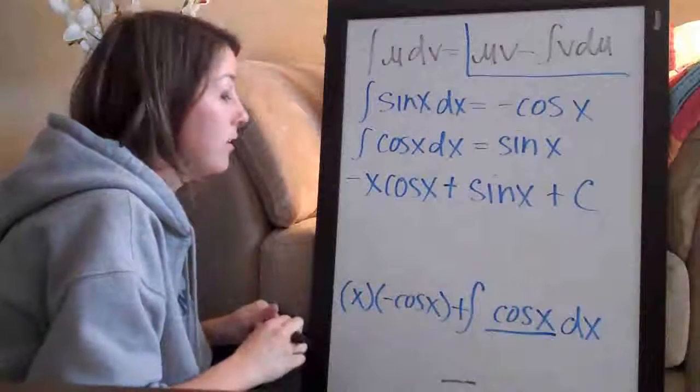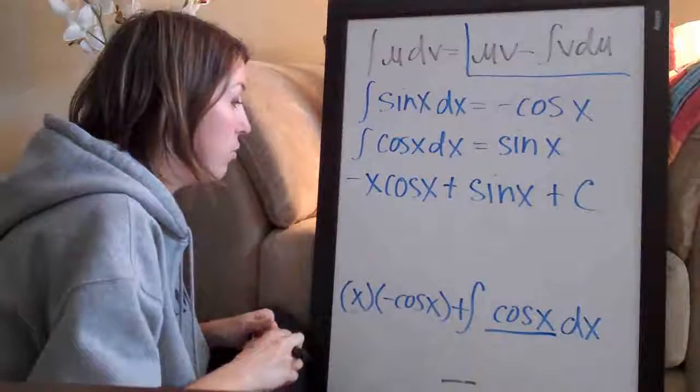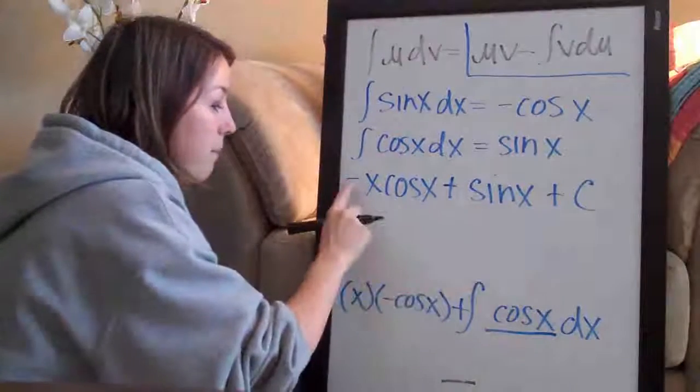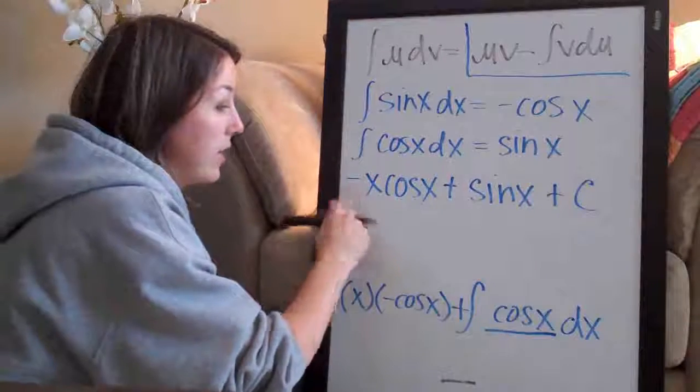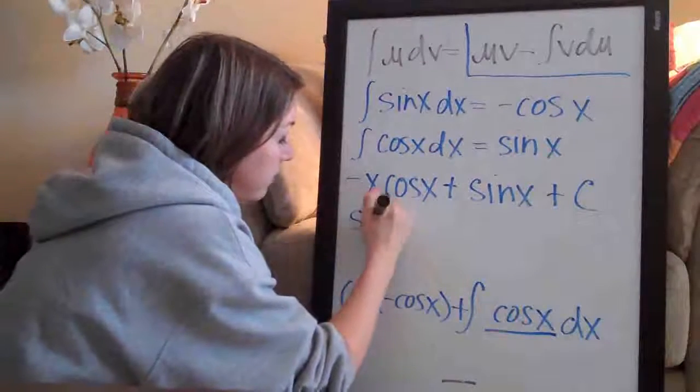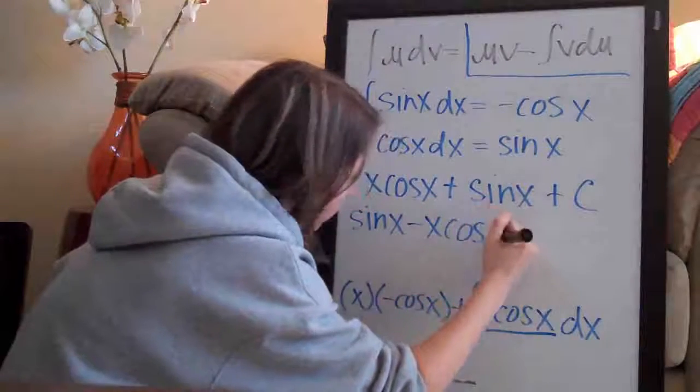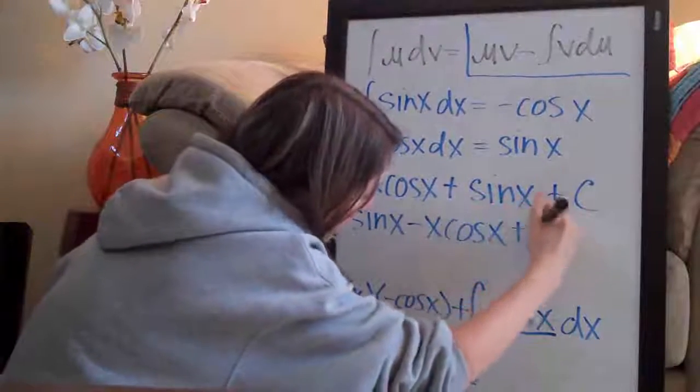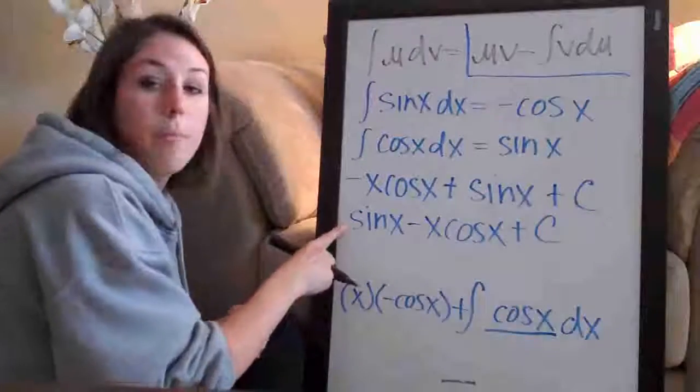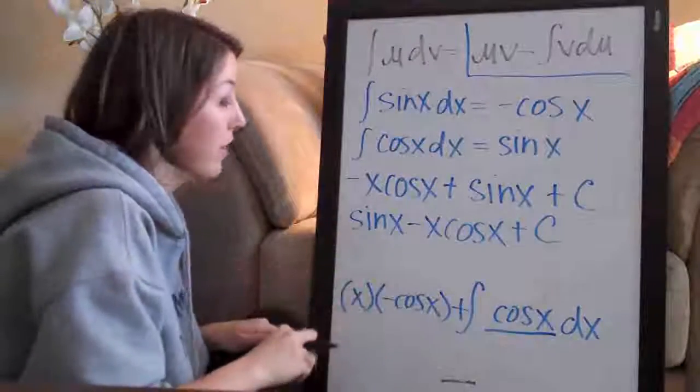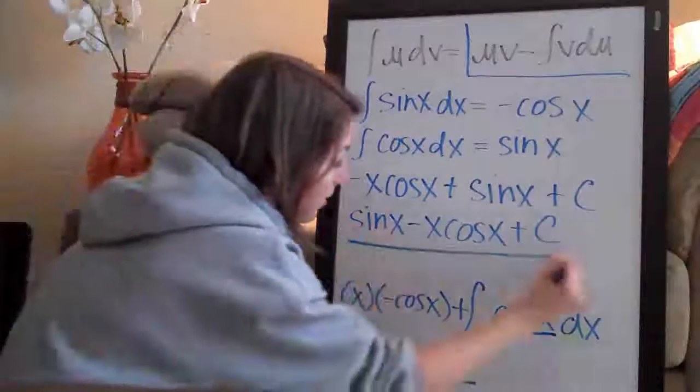If you really wanted to, you could flip these two so that you don't have the negative out in front here. And you could do sine of x minus x times cosine of x plus c which is a little bit cleaner because you start with a positive but you don't have to. Either way is fine. So, there you have it.